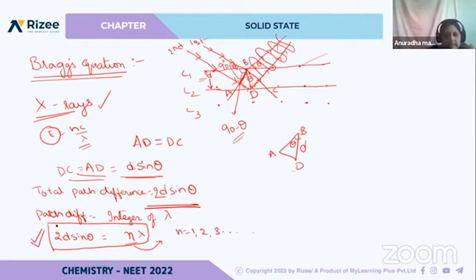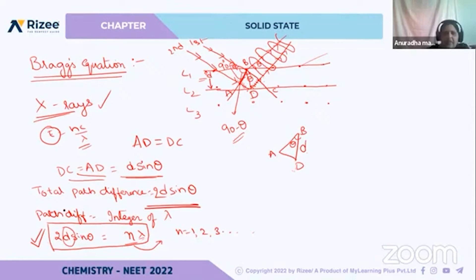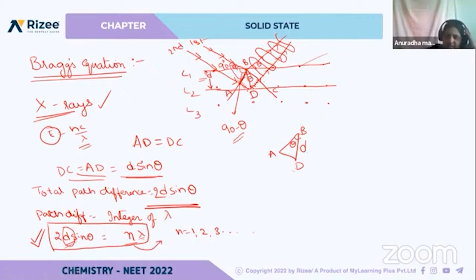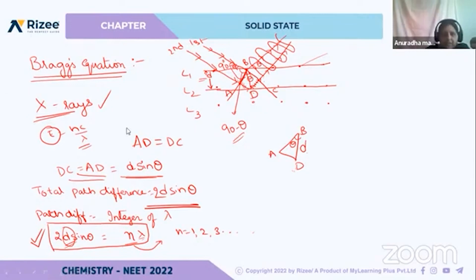For calculations, questions will give you the wavelength lambda and the angle theta, and you need to find the distance D between the layers. So, 2D sin theta = nλ is the Bragg equation used for calculating the path difference and interlayer spacing. With this, we have finished the topic of solid state.